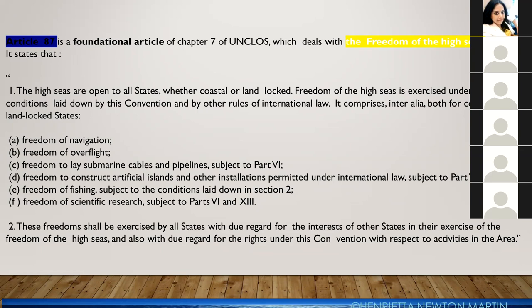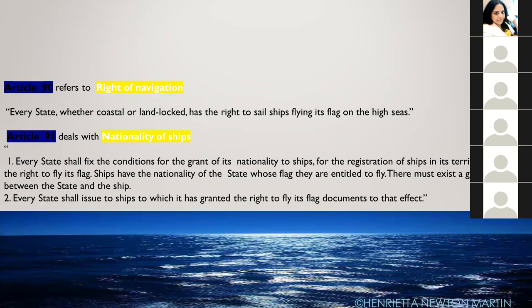Article 90 speaks about the right of navigation, stating that every state whether coastal or landlocked has a right to sail ships flying its flag on the high seas. Article 91 deals with the nationality of ships — every state shall fix the conditions for the grant of its nationality to ships, for the registration of ships, and for the right to fly its flag. There must exist a genuine link between the state and the ship.